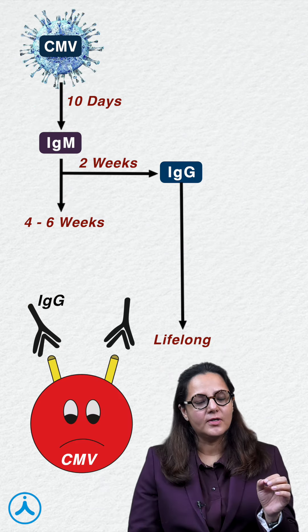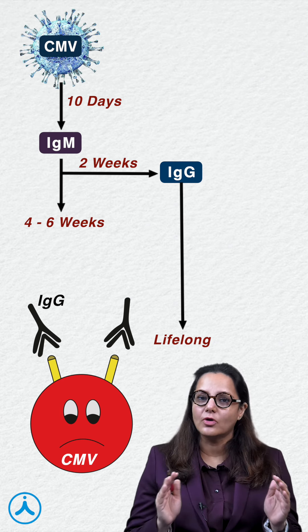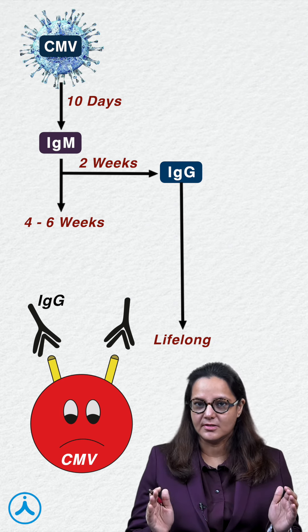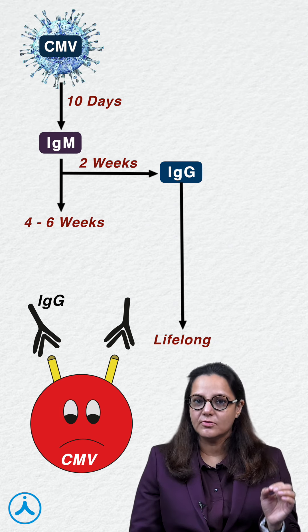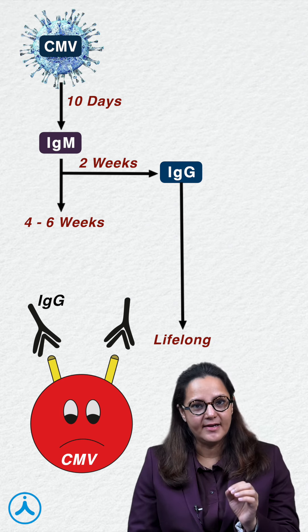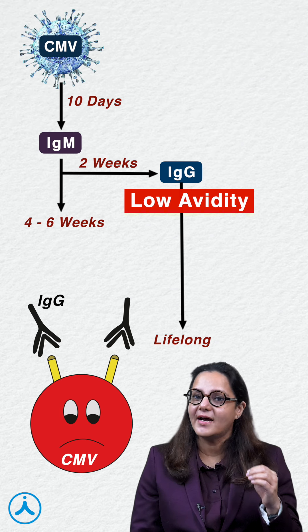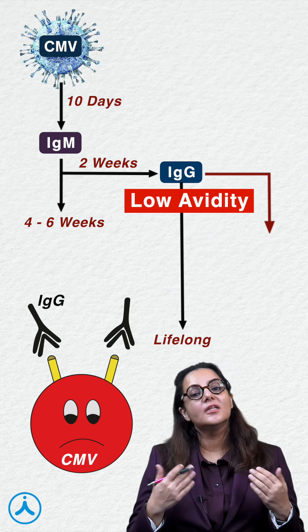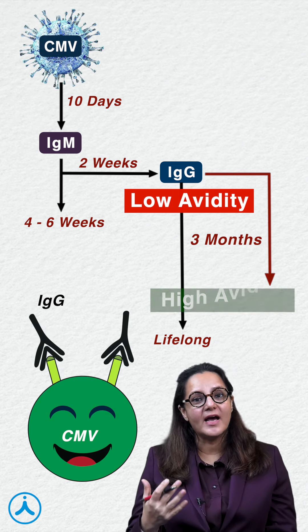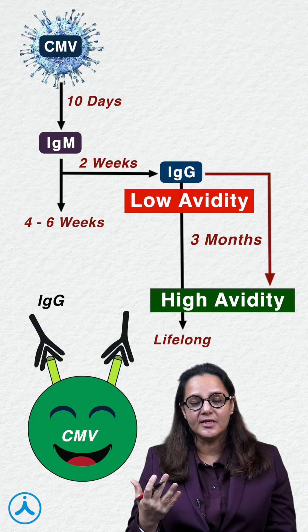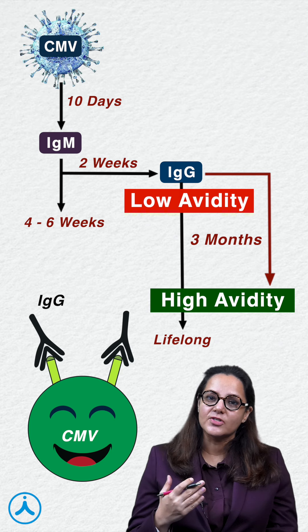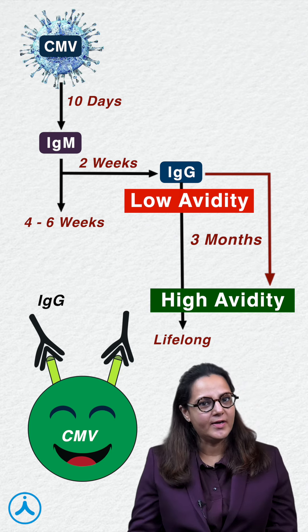IgG antibodies which have just formed will bind less strongly with the virus. The strength with which any antibody binds with the antigen is known as avidity. So at this point, IgG will have low avidity, denoting that it's a recent infection and the patient is highly infectious. 3 months post infection, IgG will have high avidity, denoting that it's a past infection and we do not worry much.